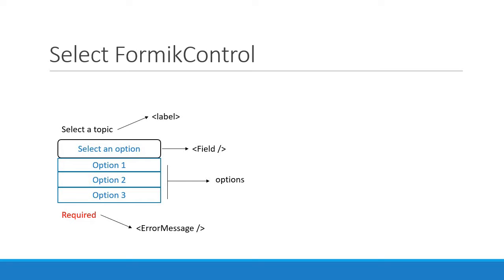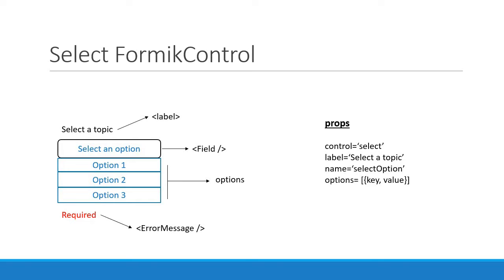To implement this select component, let's take a look at the props required. First and foremost we set the control prop to 'select', which is required to determine the type of Formik control we need to render. Second, we need a label prop for the label text. Third, we pass in the name prop which is required by Formik for the Field as well as the ErrorMessage components. Another essential prop is the options prop, which is an array of objects containing key-value pairs used to populate the drop-down.